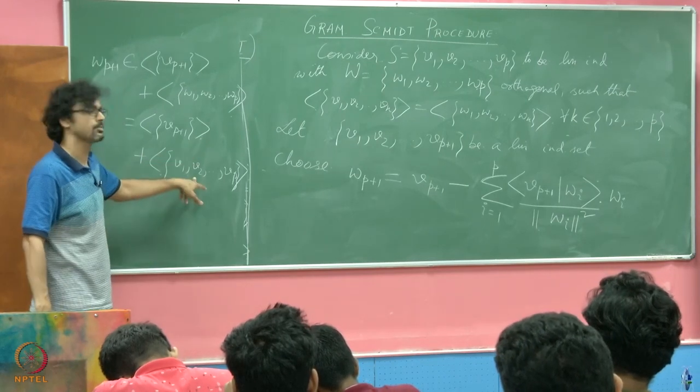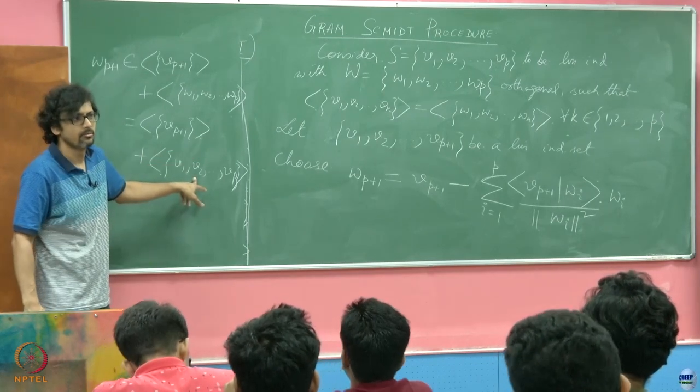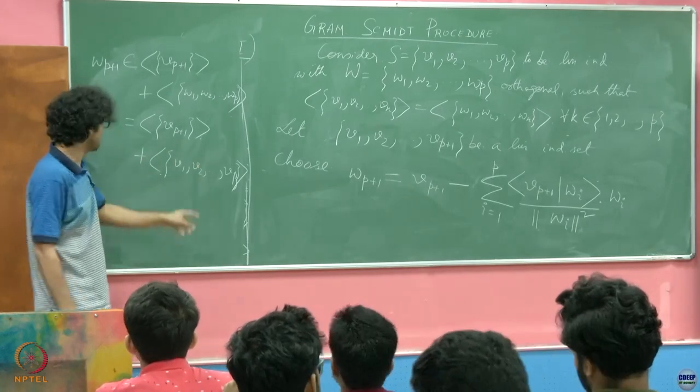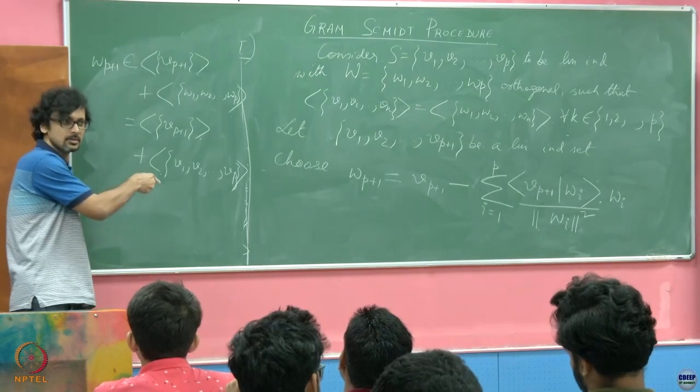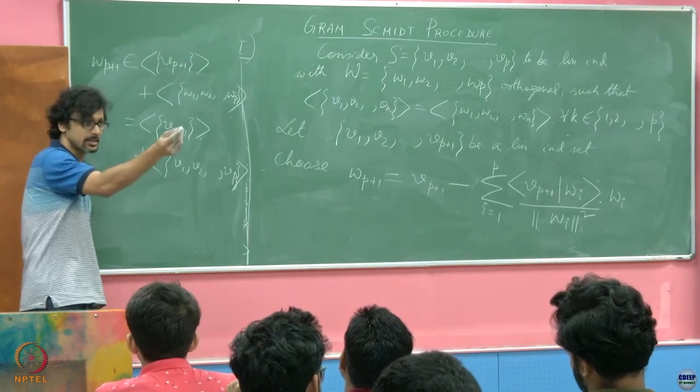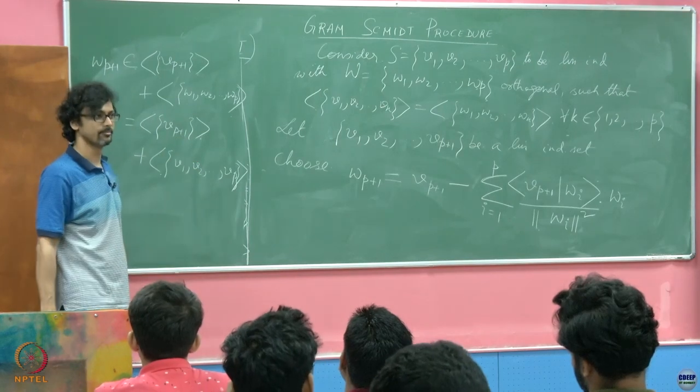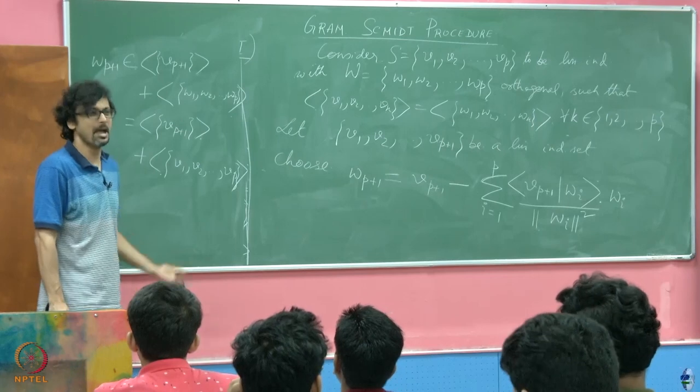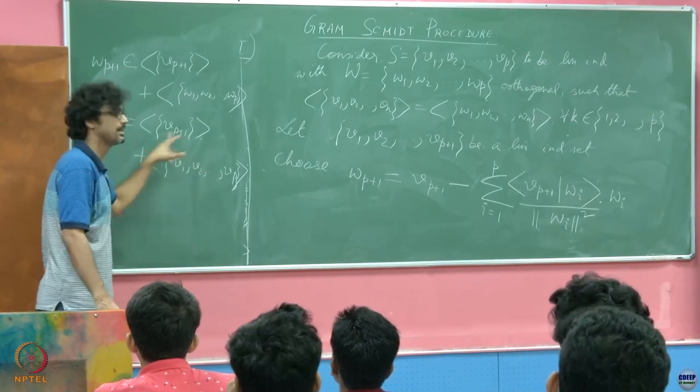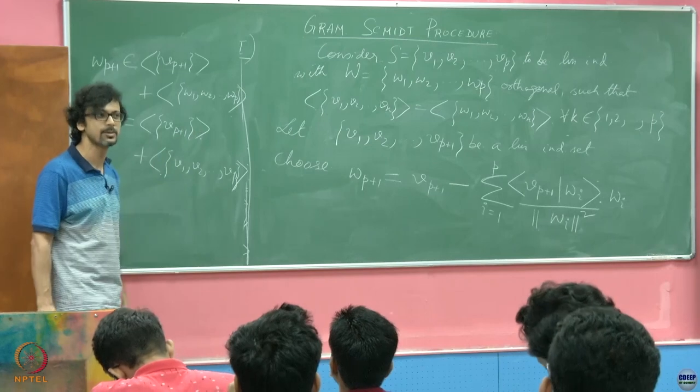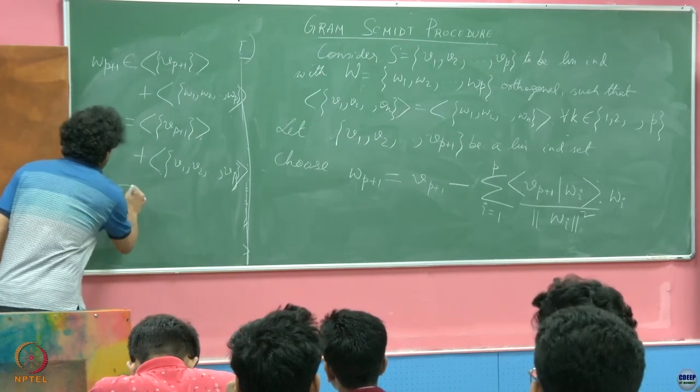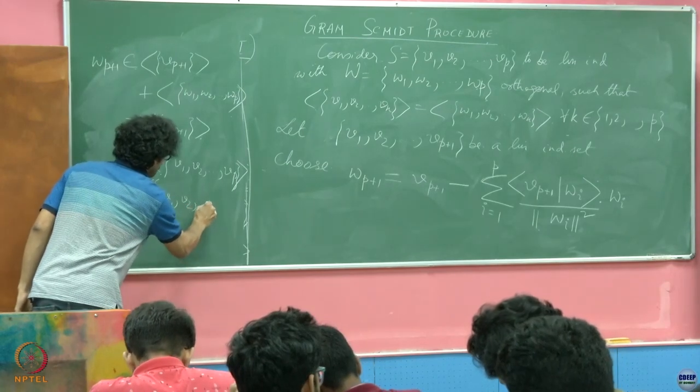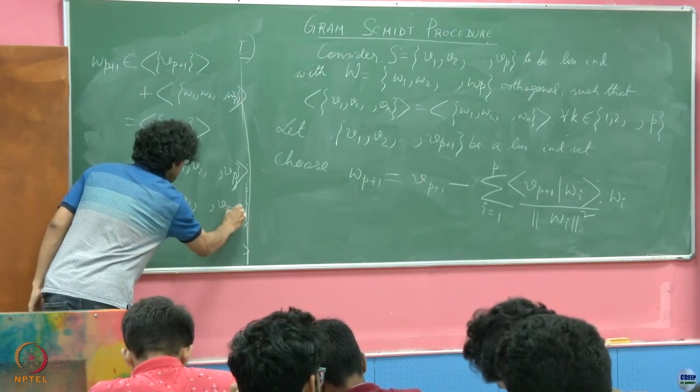Can this fellow belong to this subspace? Of course not. So when I write this as a sum like so, is this not also equal to, yeah, it is a direct sum. So what is this equal to then? If it is a direct sum, the dimensions add up. Dimensions add up means this is a linearly independent set. So it is a basis for a P plus 1 dimensional subspace. So this is also equal to the span of V 1, V 2 until V P plus 1.